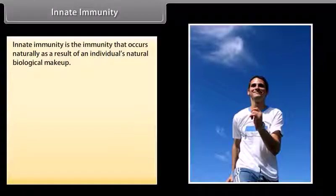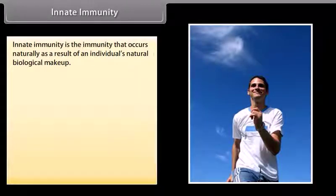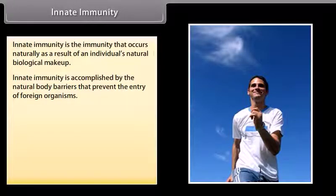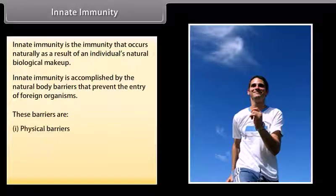Innate immunity is the immunity that occurs naturally as a result of an individual's natural biological makeup. Innate immunity is accomplished by the natural body barriers that prevent the entry of foreign organisms. These barriers are: physical barriers, physiological barriers, cellular barriers, and cytokine barriers.